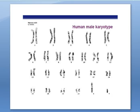Here we have a human male karyotype. Notice it looks very similar to the previous slide. However, the last set of chromosomes — X, Y — means it's going to be a boy.